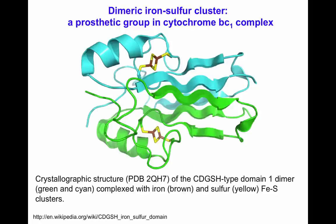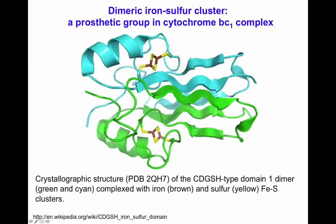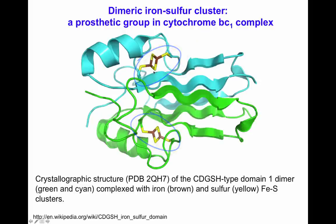Here is an example of a dimeric iron-sulfur cluster protein. This protein has an iron-sulfur prosthetic group. It has two different polypeptides — one shown in cyan and one shown in green — complexed with iron-sulfur clusters. The iron molecule is shown in brown and the sulfur in yellow. Those are the prosthetic groups that accept electrons during the electron transport chain.